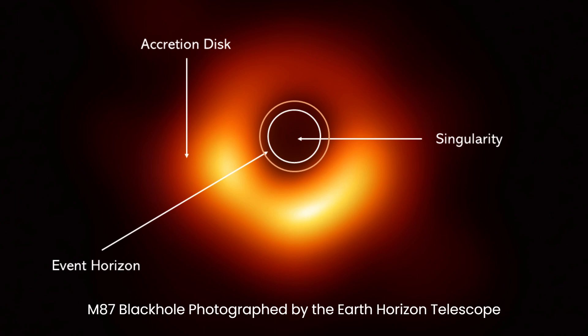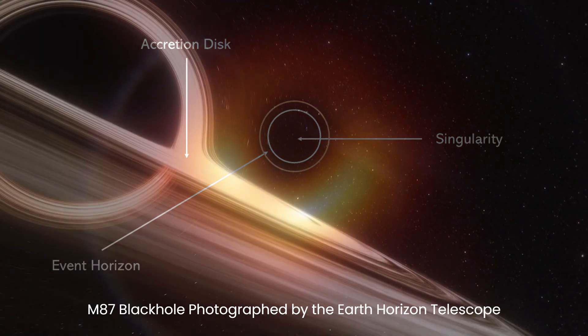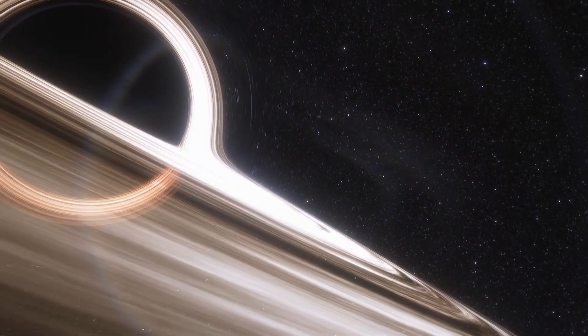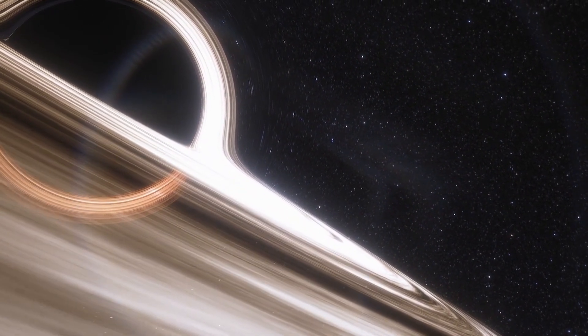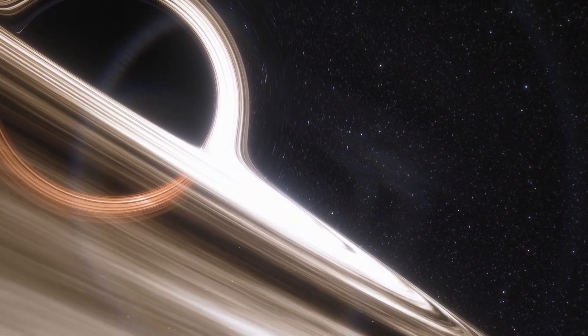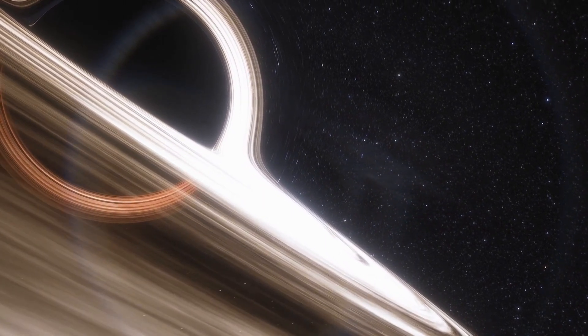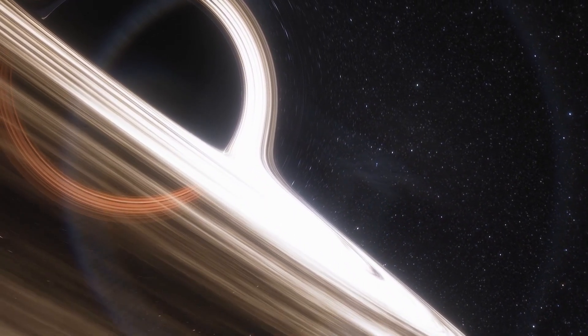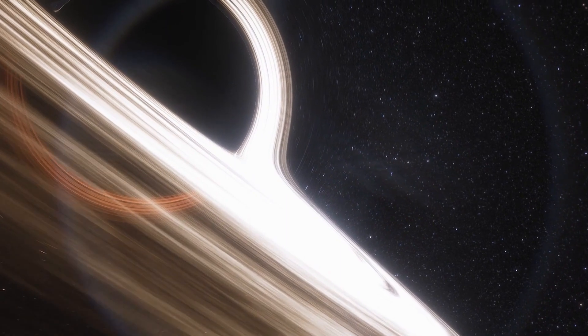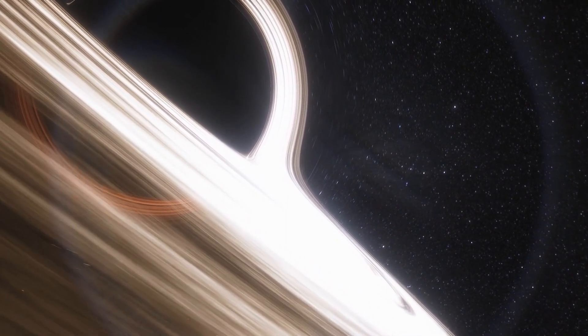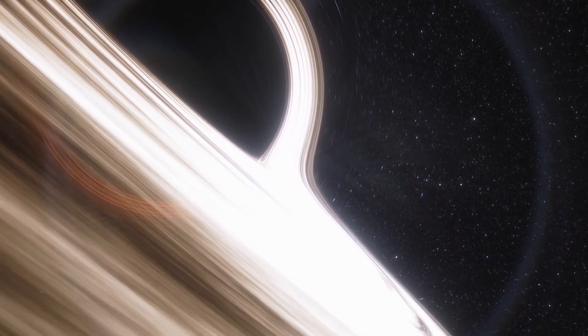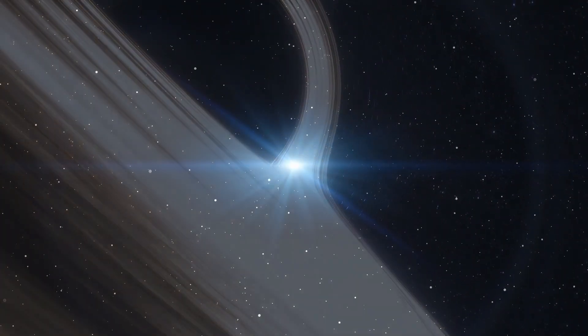As matter in the accretion disk spirals closer to the black hole, it is subjected to extreme gravitational forces and friction. This gravitational energy and frictional forces convert some of the matter's potential energy into kinetic energy and heat. Consequently, accretion disks can become incredibly hot and emit intense radiation, often in the form of X-rays and in some cases, visible light.